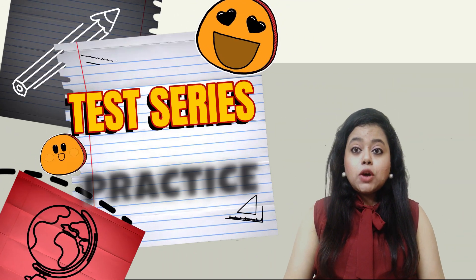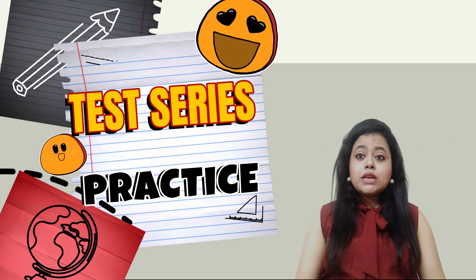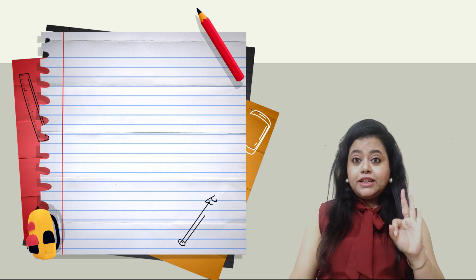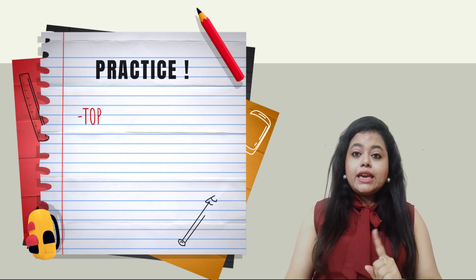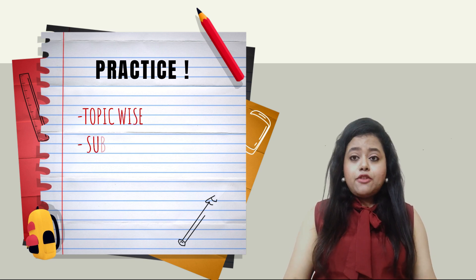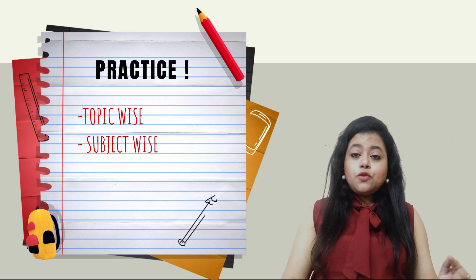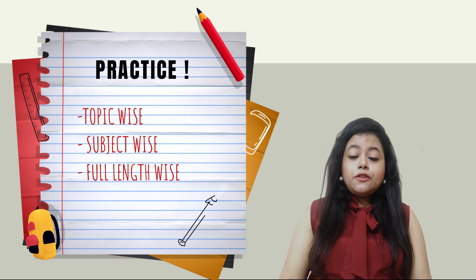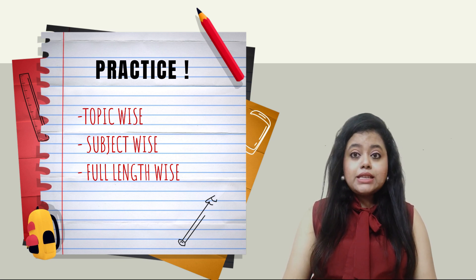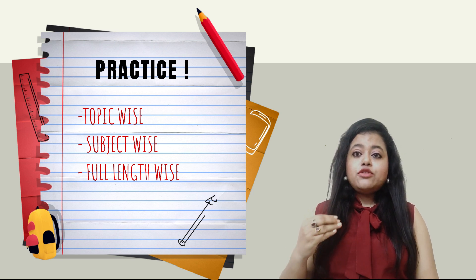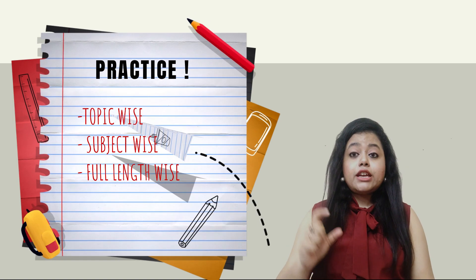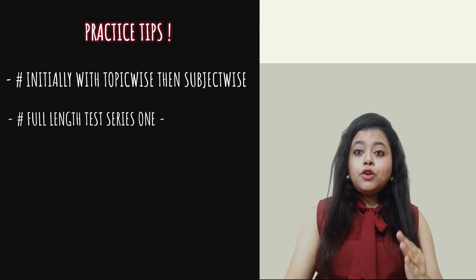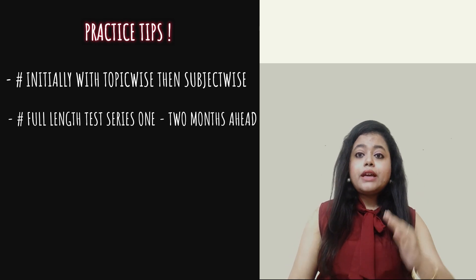After completing your entire syllabus and covering your notes, next comes practice. Practice can be done in three ways. First is topic-wise — for each topic in a subject. Second is subject-wise. Third is full-length. For beginners, start with topic-wise practice, then progress to subject-wise. Once you master individual topics and subjects, you can move on to full-length practice.